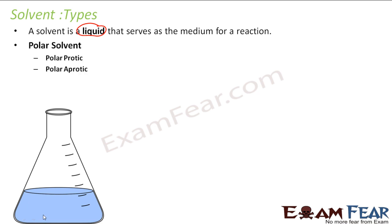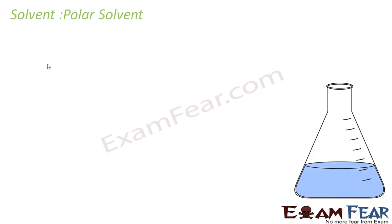There are two different kinds of solvents. Polar solvent — in polar we have polar protic and polar aprotic — and we have non-polar solvents. In polar we have a further division into polar protic and polar aprotic solvent. So let us study this first type, that is polar solvents.